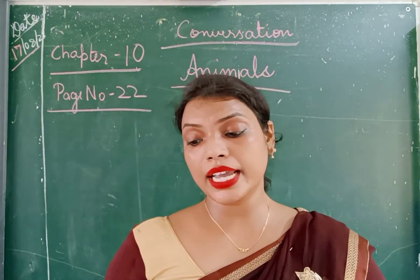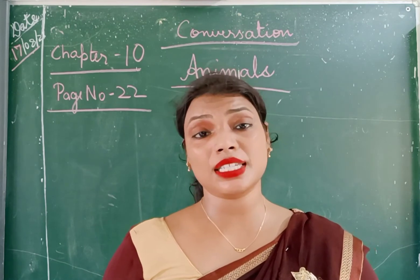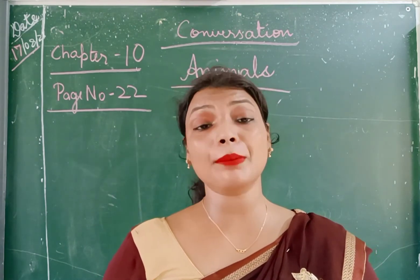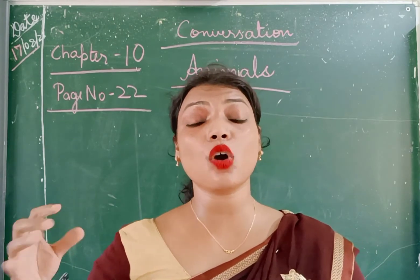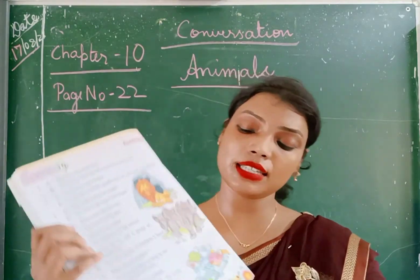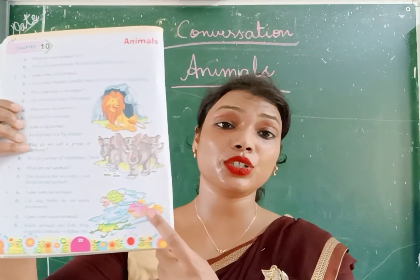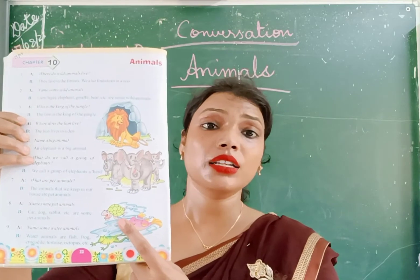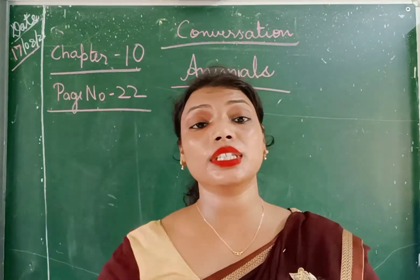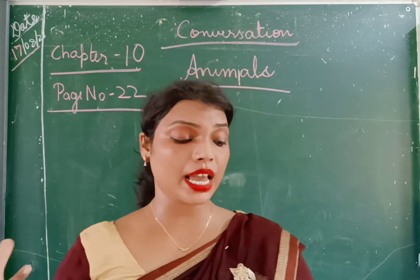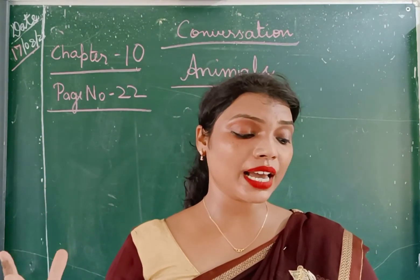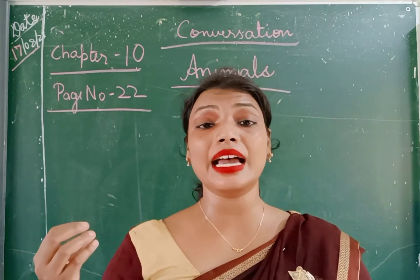Ninth one — name some water animals. Water animals, see kya matlab hai children? It means jo paani wala janwar. You can see some water animal images in the book: tortoise is there, fish is there, frog is there. Water animals are fish, frog, crocodiles, tortoise, octopus, and etc.